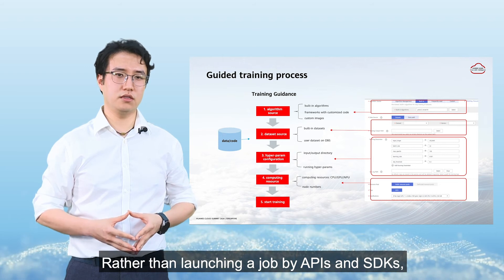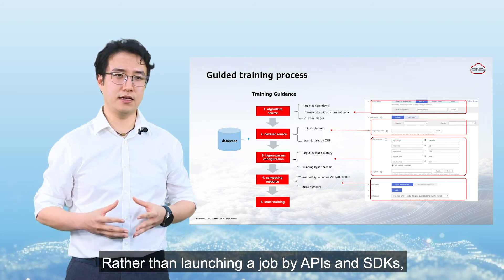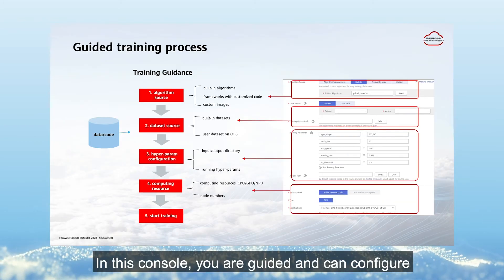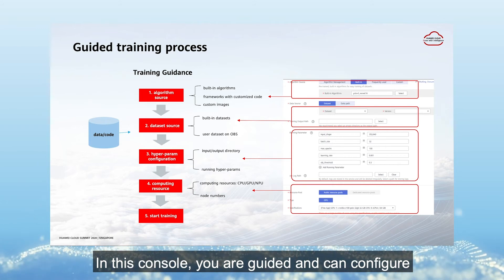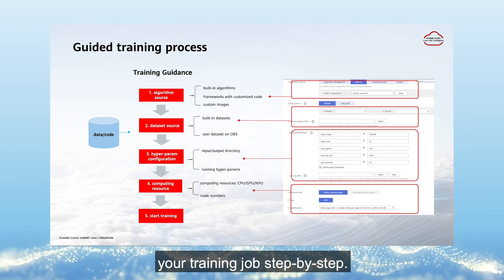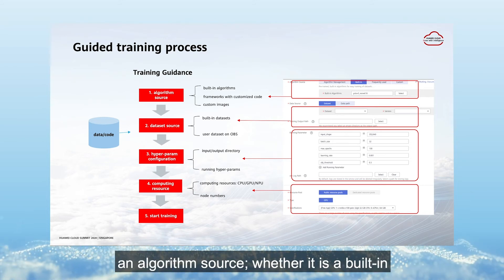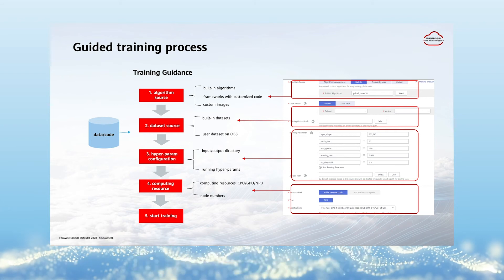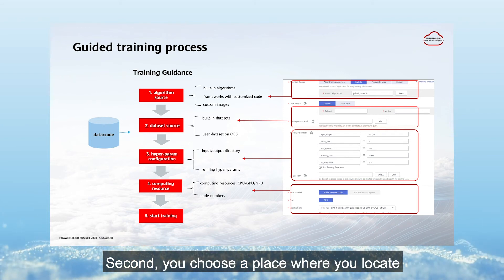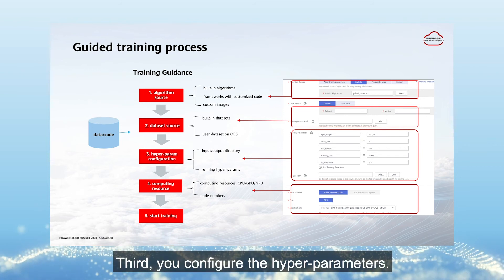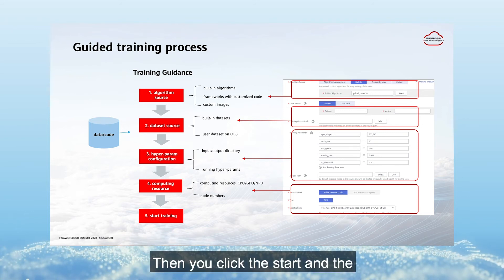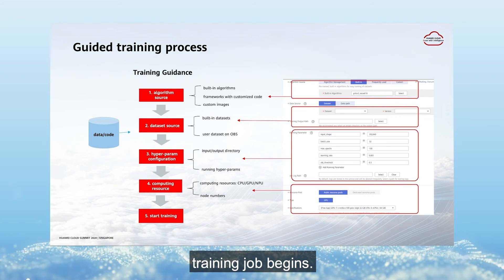Rather than launching jobs via APIs and SDKs, Model Arts also provides a wizard-based console. In this console, you are guided to configure your training job step by step. First, you choose the algorithm source — whether it is a built-in or custom algorithm. Second, you choose the location of your dataset. Third, you configure the hyperparameters and choose a computing resource. Then you click Start and the training job begins.